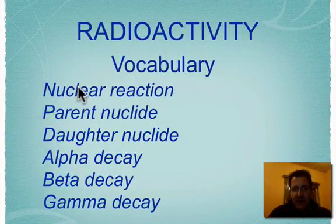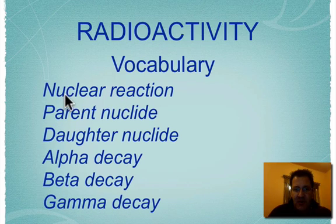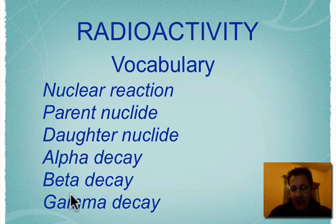All right, here's the vocabulary we're going to have to be aware of and know. We have nuclear reactions. All these are nuclear reactions, not chemical reactions. We have the parent nuclei, the thing we start with, the daughter nuclei, the thing we end up with, and we have alpha, beta, and gamma decay, and we also have alpha, beta, and gamma particles.